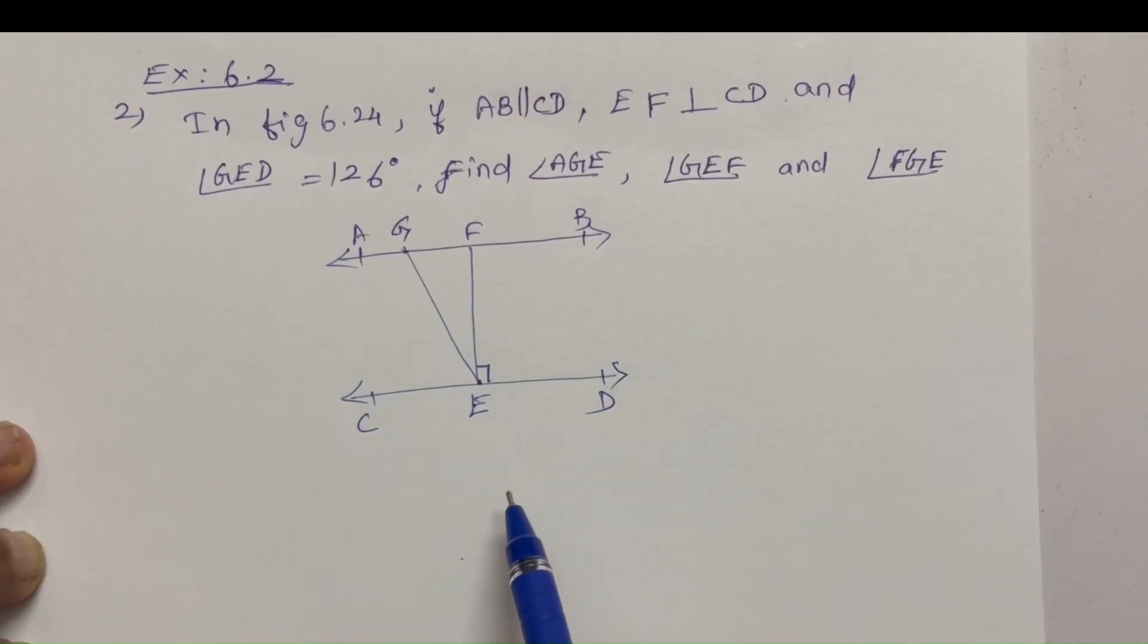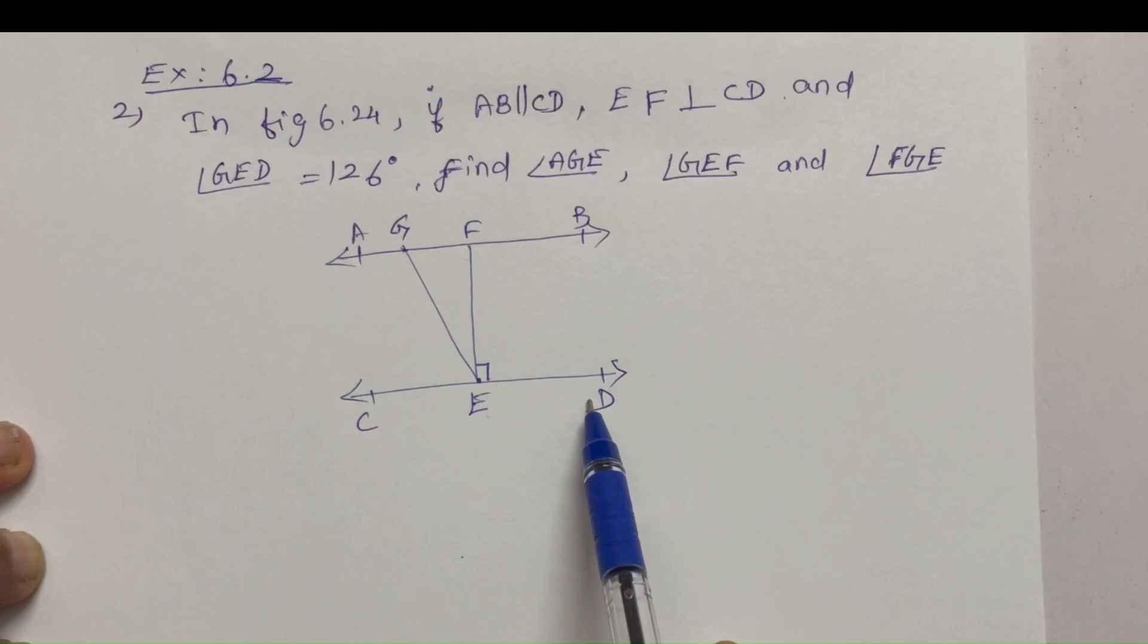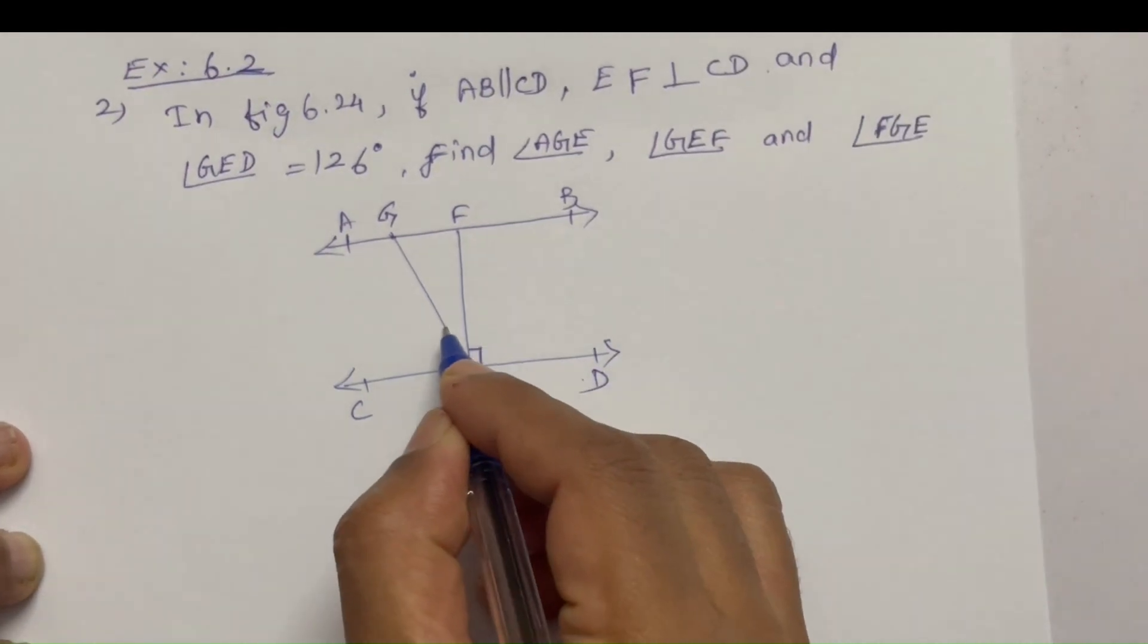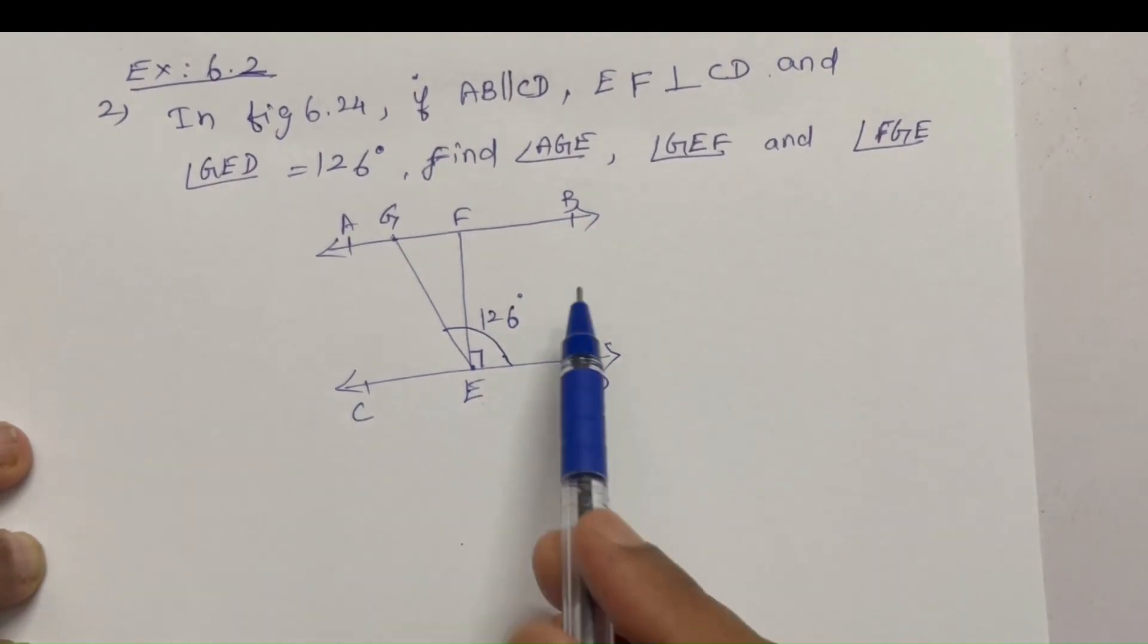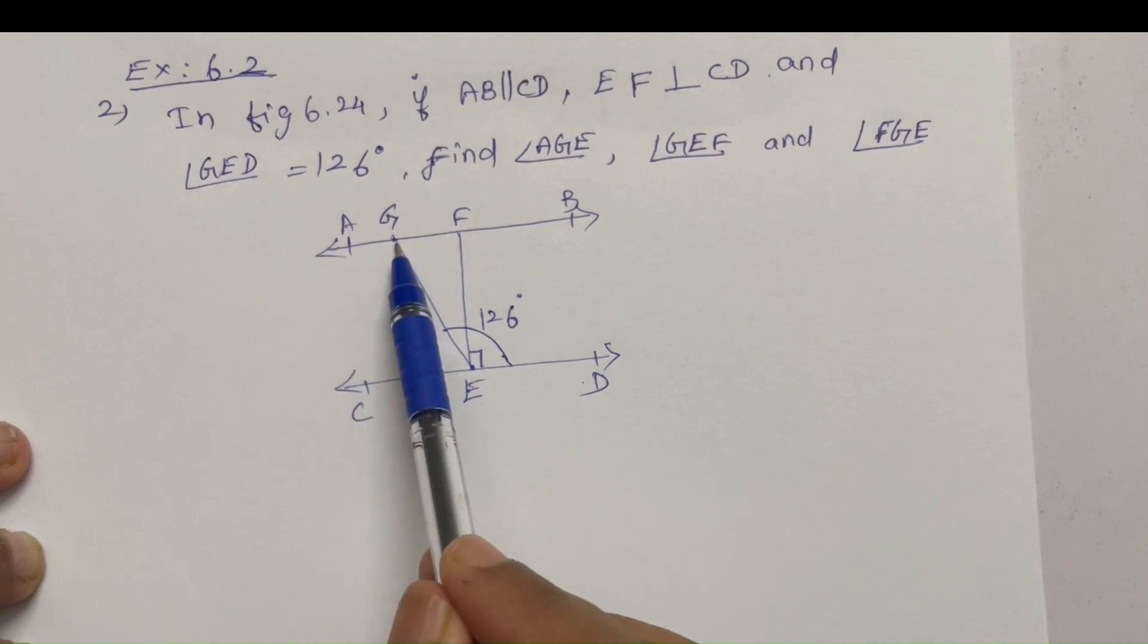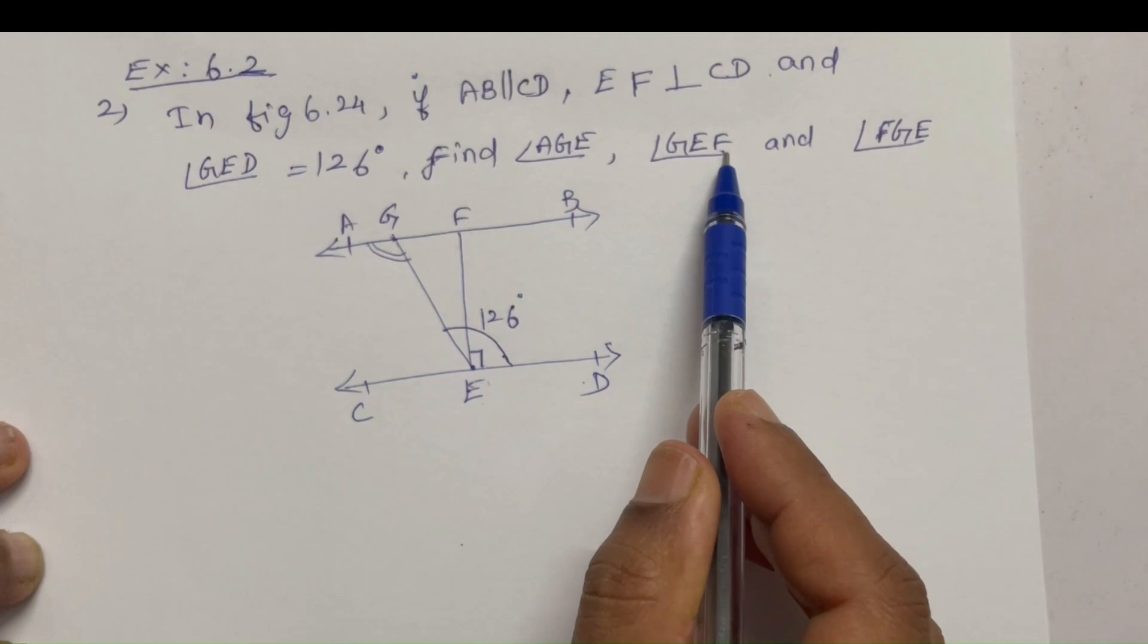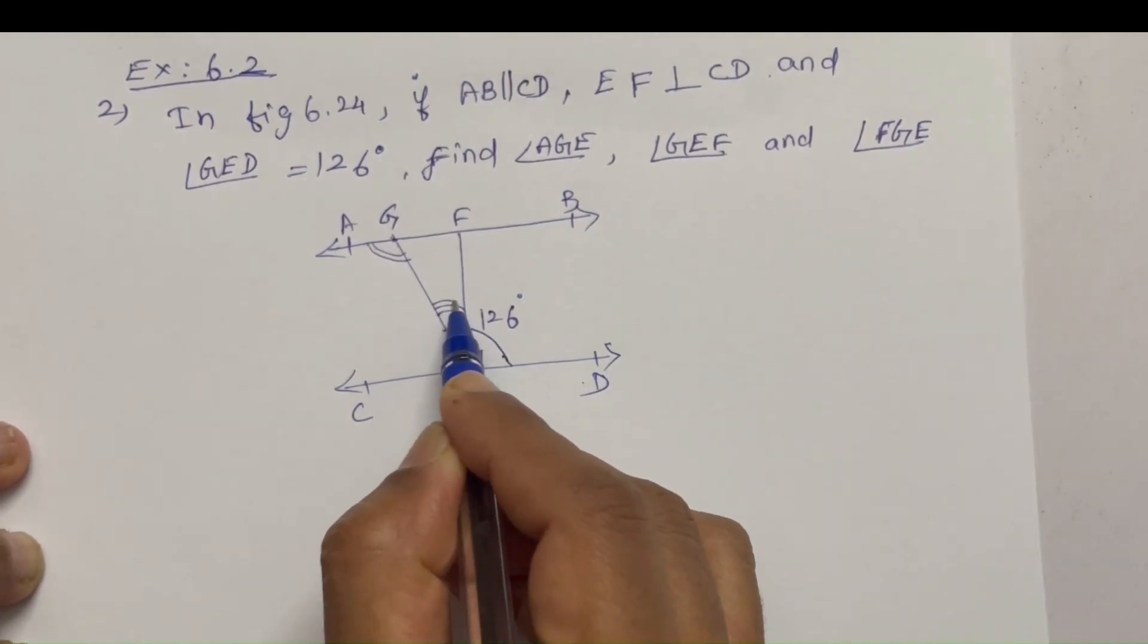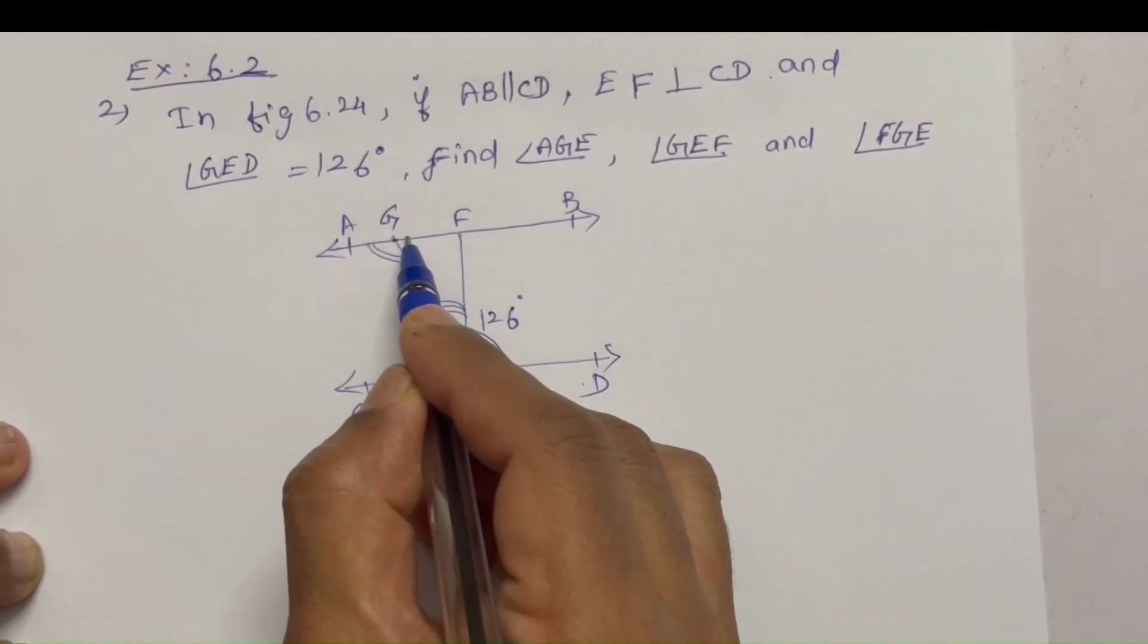In figure 6.24, if AB parallel to CD, EF perpendicular to CD, and angle GED equal to 126 degrees - this angle is 126 degrees. Find angle AGE, angle GEF, and angle FGE.